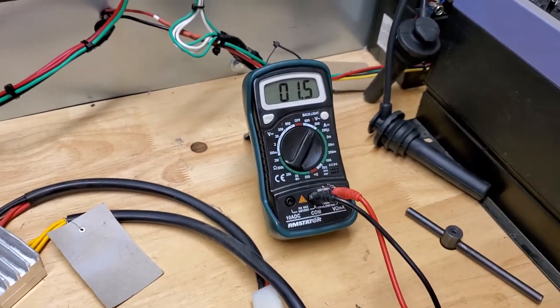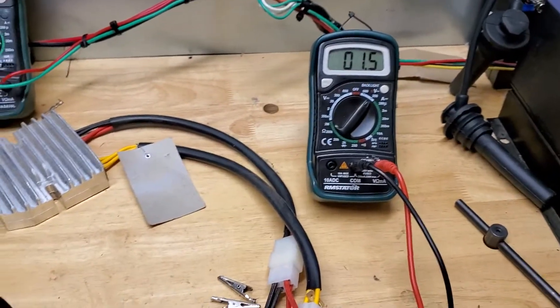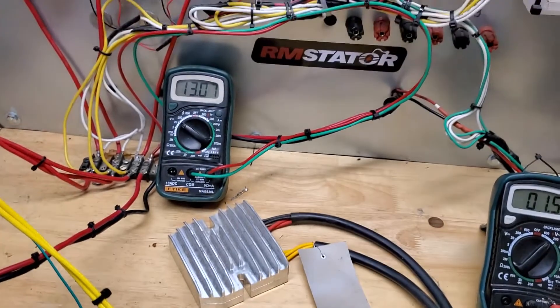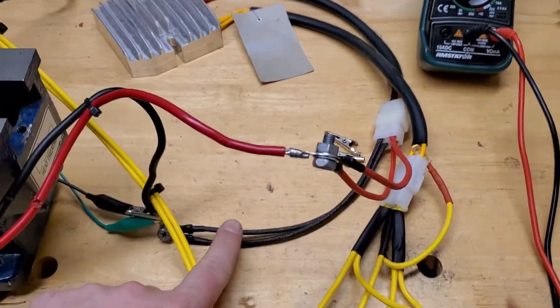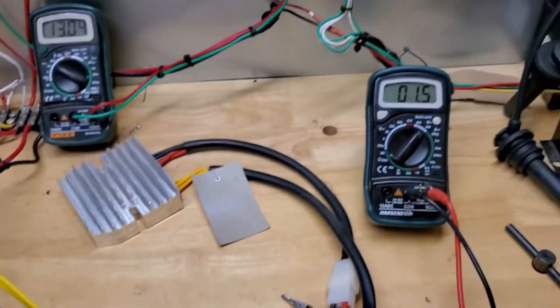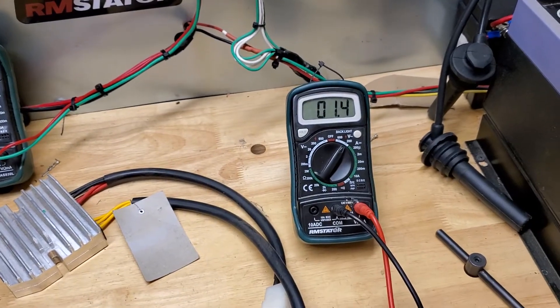You can see that if we have a short to ground in the stator and it's connected to the regulator, and therefore has a path to ground back through the battery negative terminal, it kills the output of the stator.